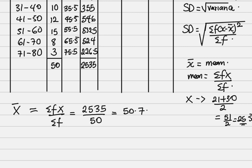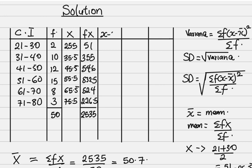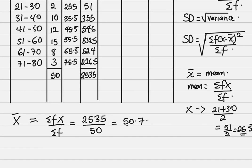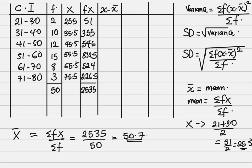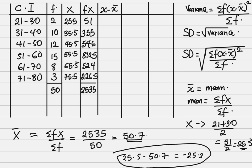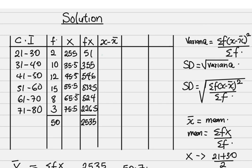Since we have that, the next thing is to find x minus x̄. x̄ is the mean, which is 50.7. The first value is 25.5 minus 50.7, giving minus 25.2. Continuing down the column: minus 25.2, minus 15.2, minus 5.2, then 4.8, 14.8, and 24.8.